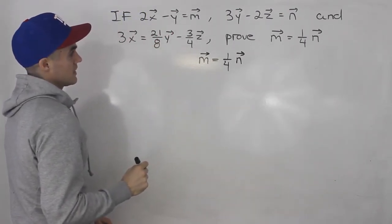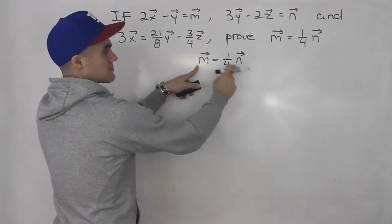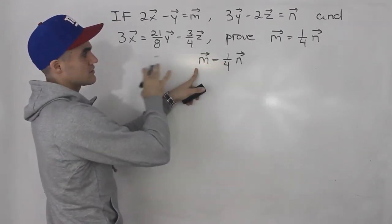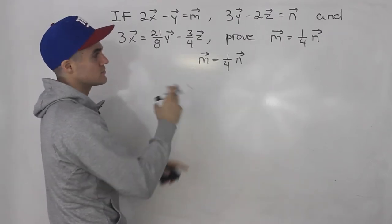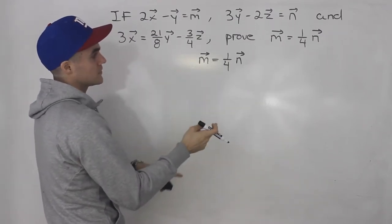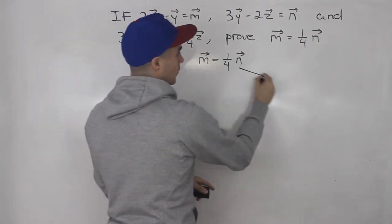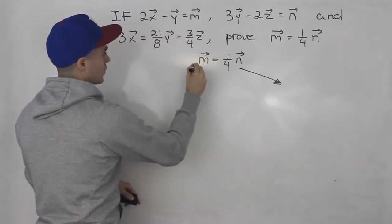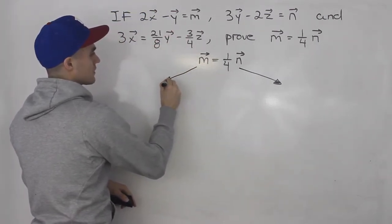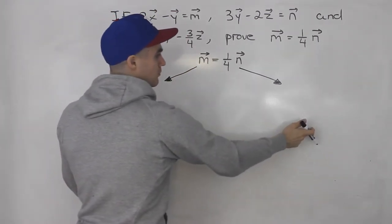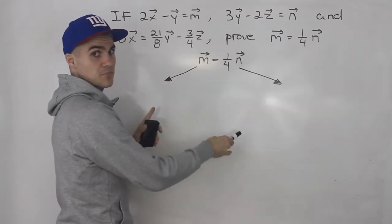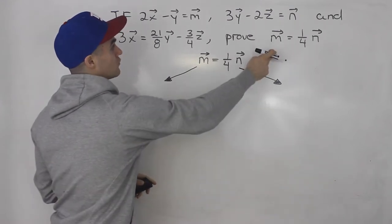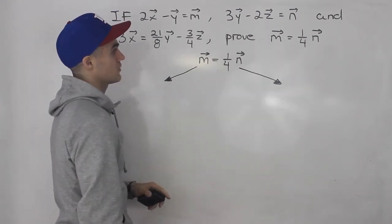There are multiple ways to solve this question — different algebraic sequences you can use to prove this. The way I'm going to do it is work with the right side of one equation and the left side of the other. If I can make both of these sides equal — have equal expressions on both sides — then we've pretty much proved that this equation is going to hold.